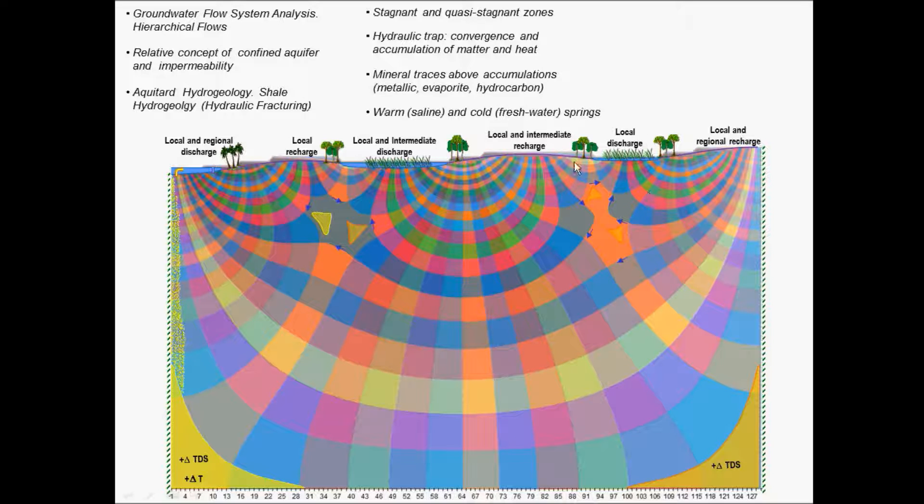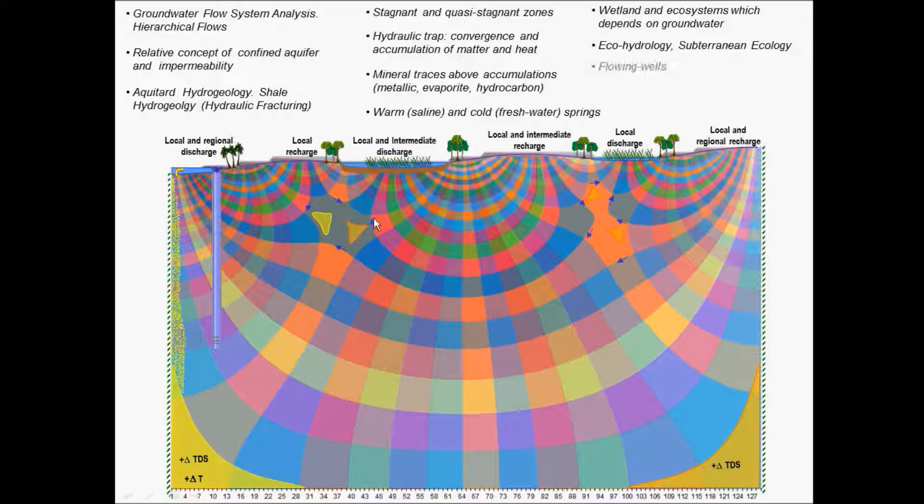Indicators of ecosystems. This zone below the surface water, the hyporheic zone, also plays an important role in ecosystems. Wetland and ecosystem which depends on groundwater, also ecohydrology and subterranean ecology, flowing wells.